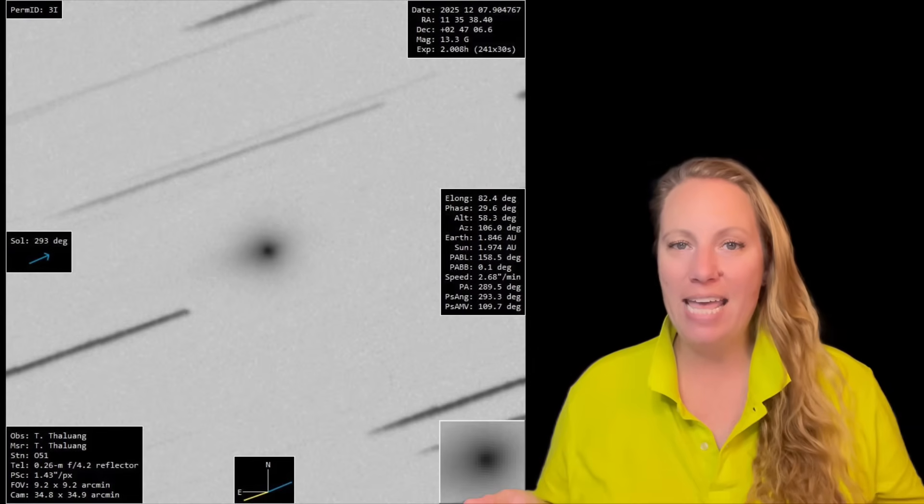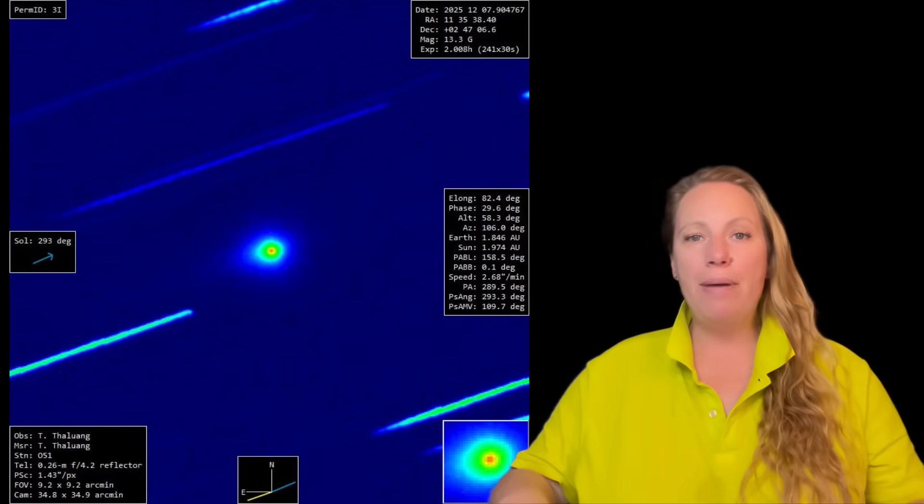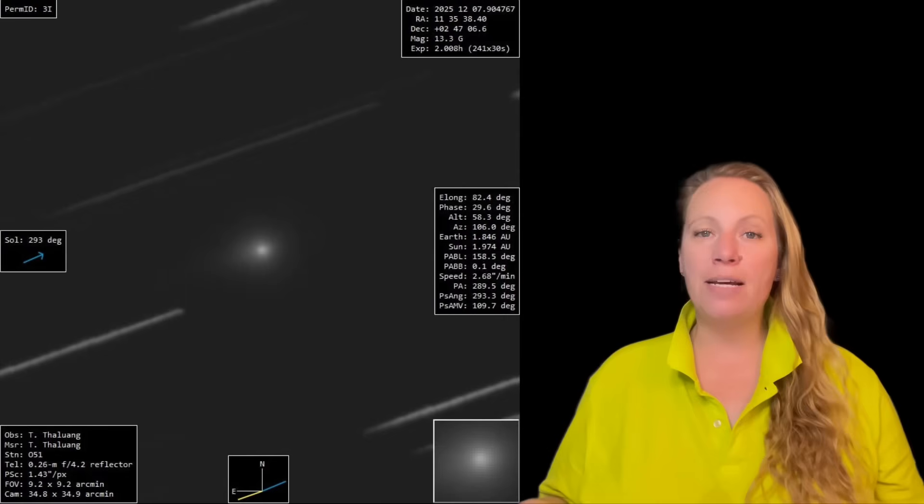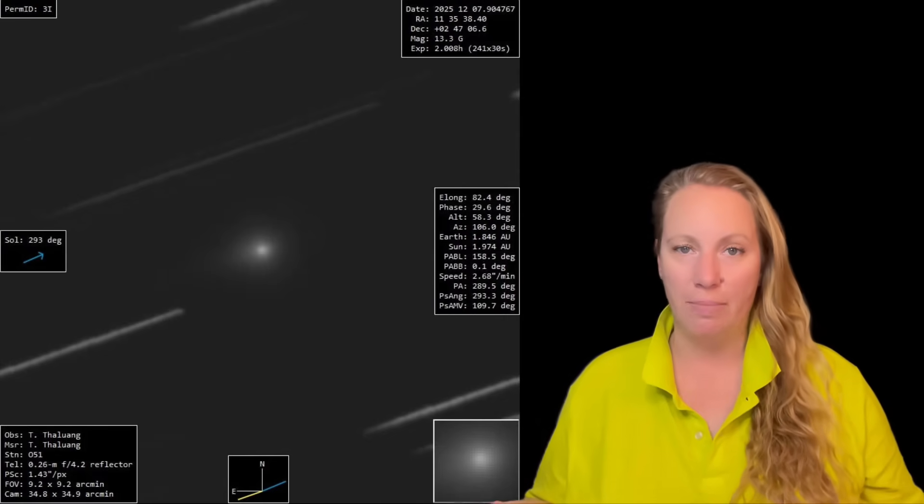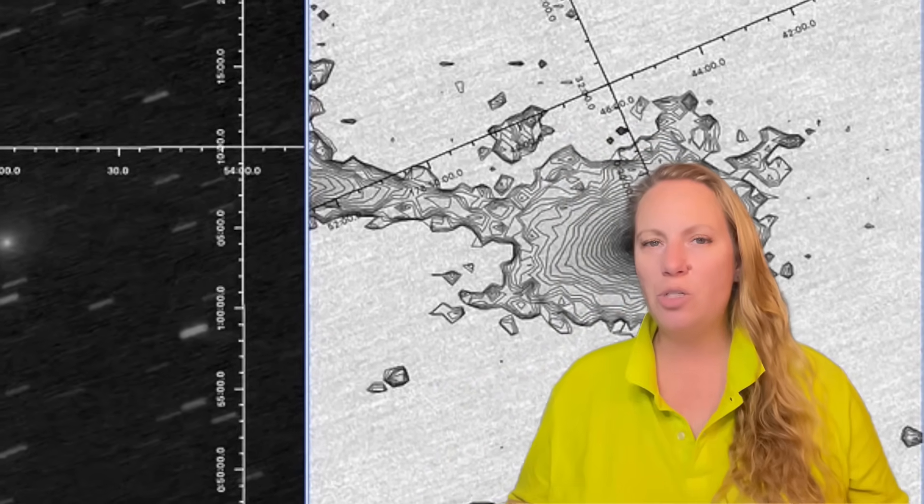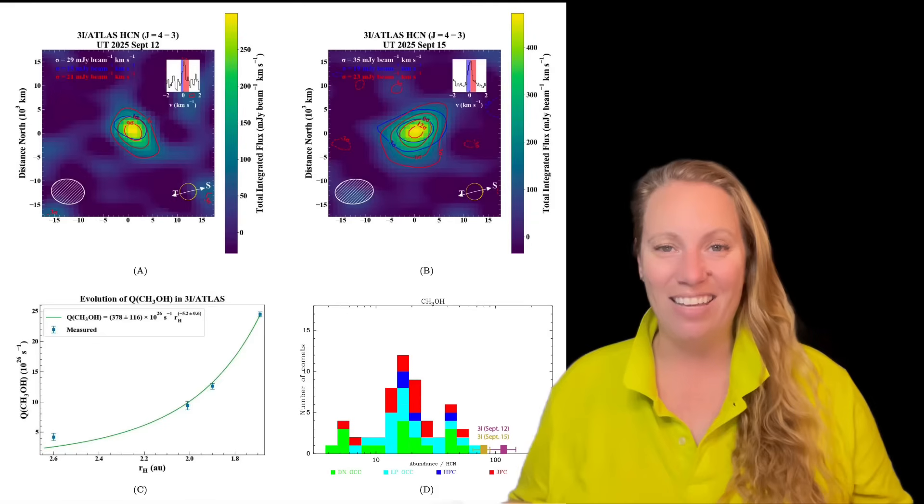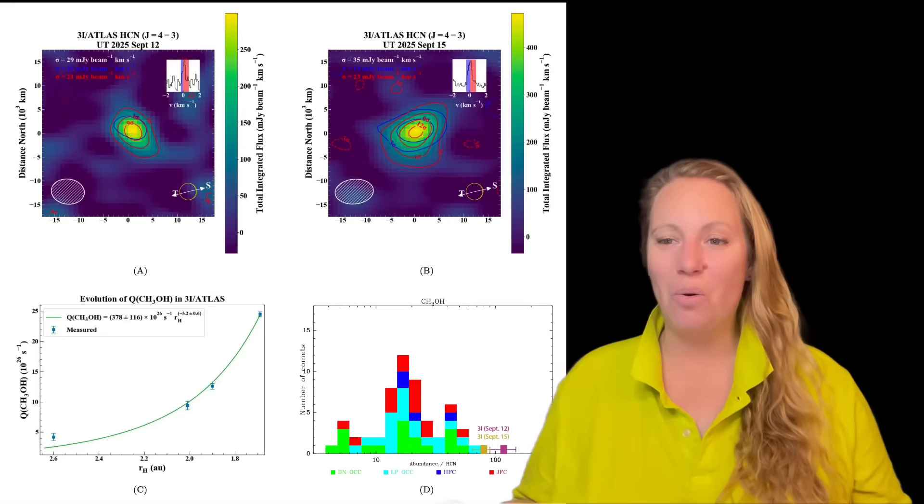New images every day, and it's getting stranger. More questions are added instead of being answered. Imagine a mysterious visitor from another star system drifting into our solar system. That's what's happening right now, and it doesn't behave like anything we've ever seen before.